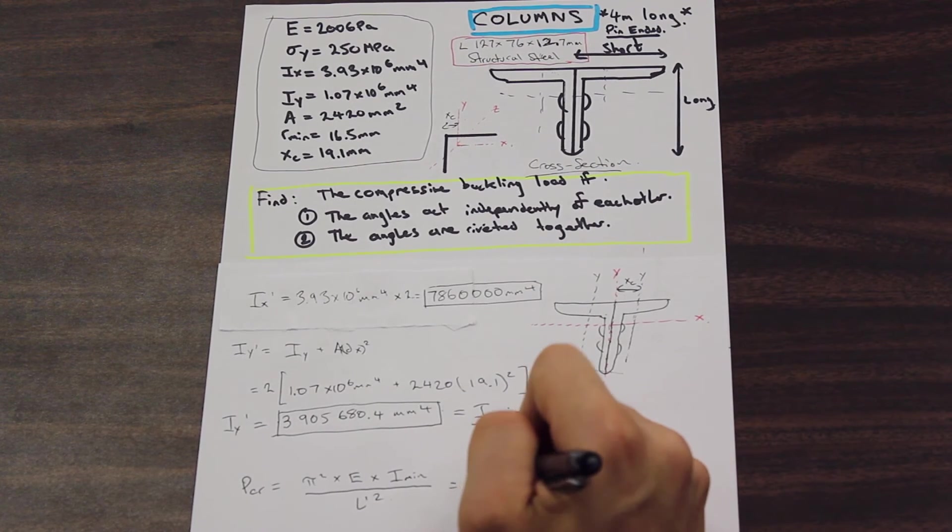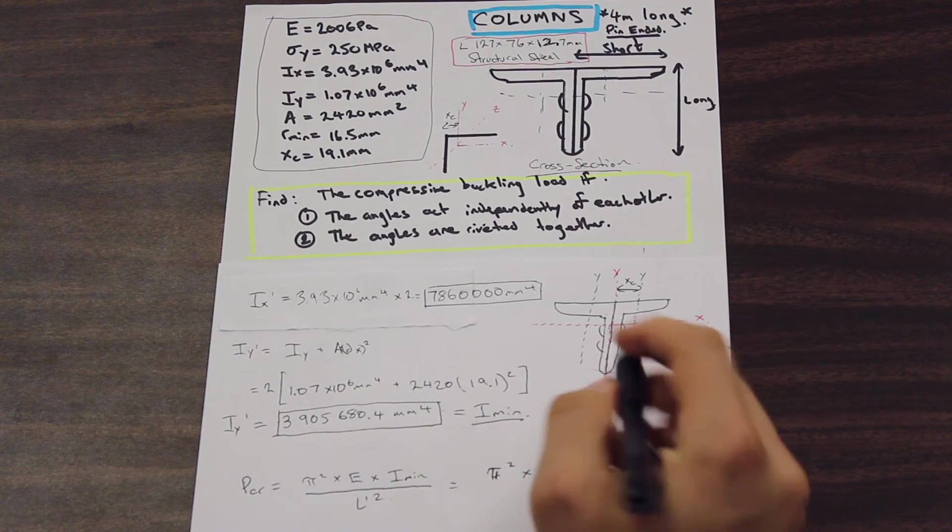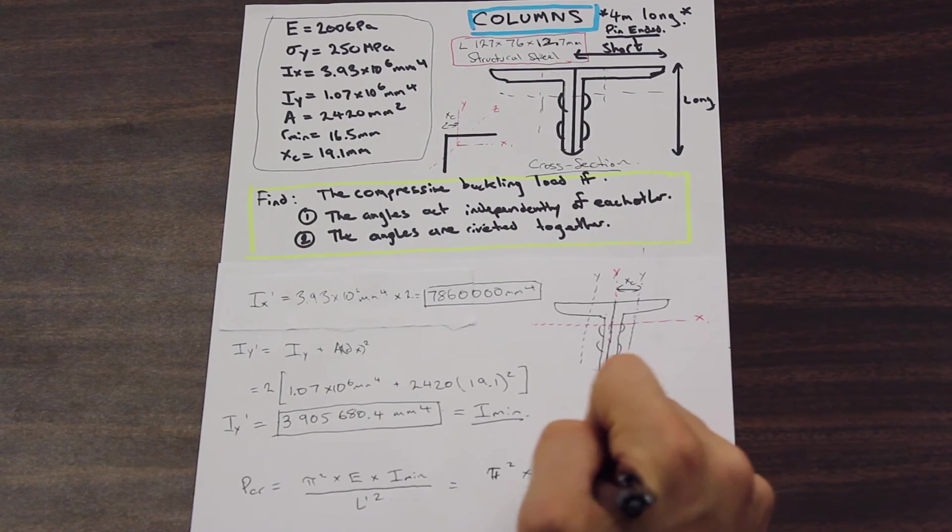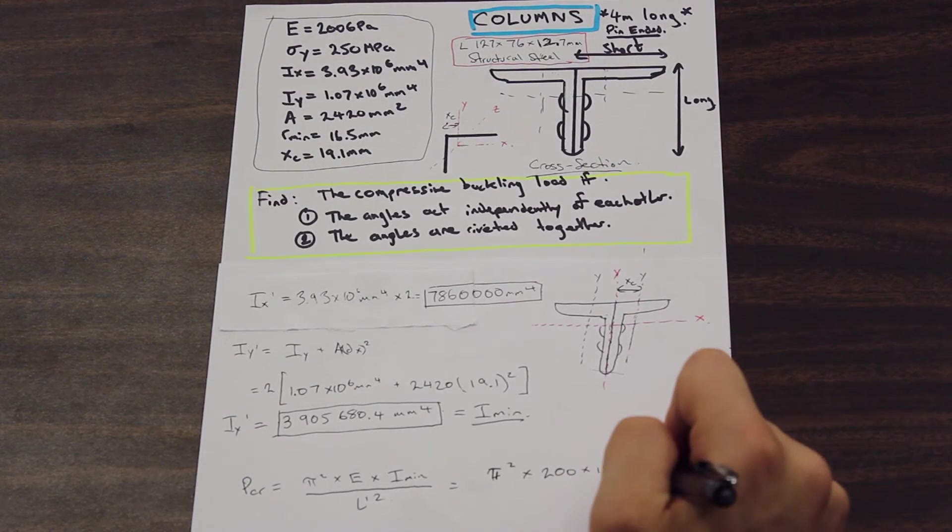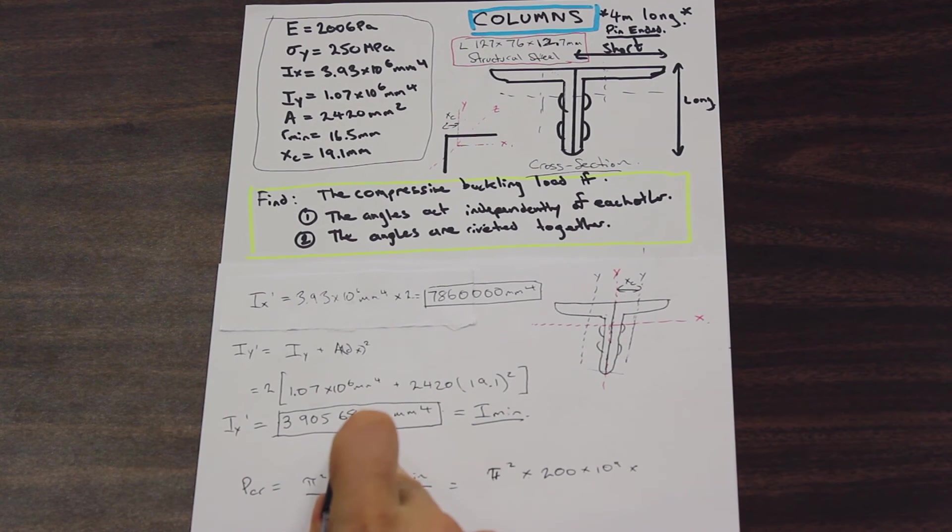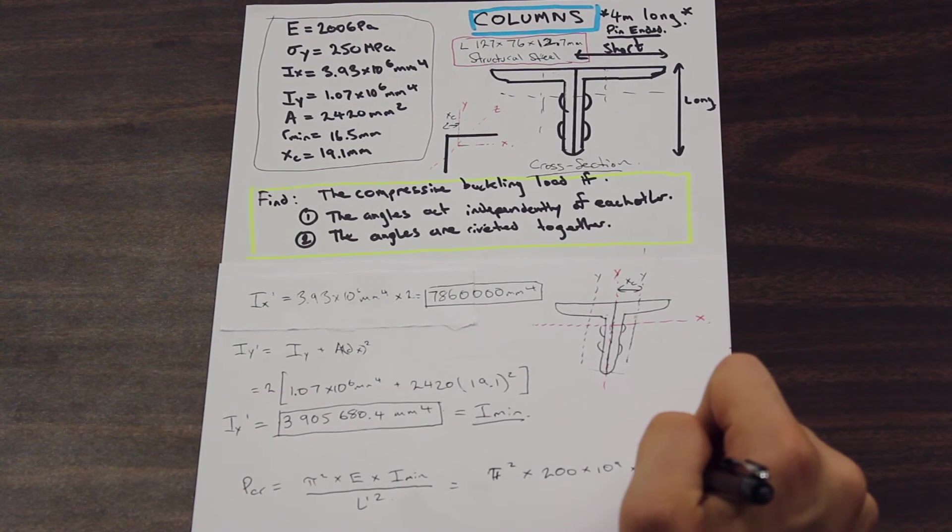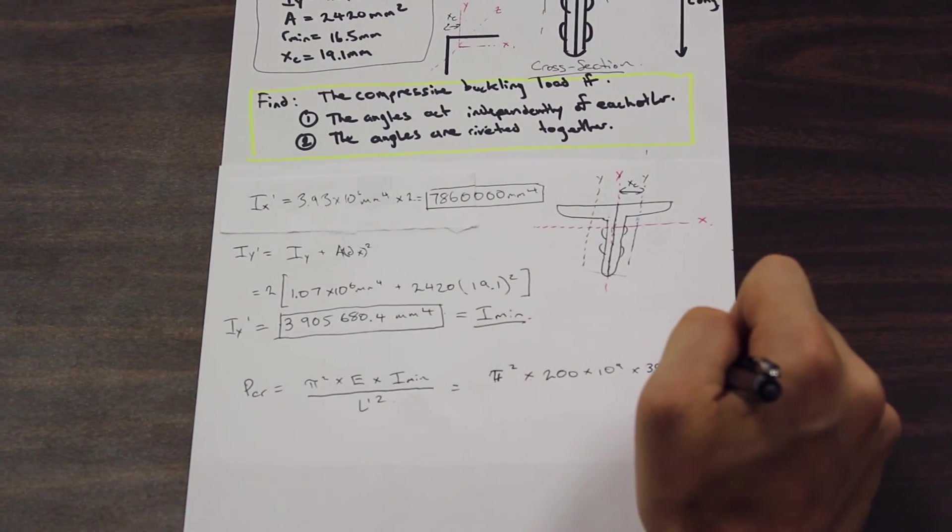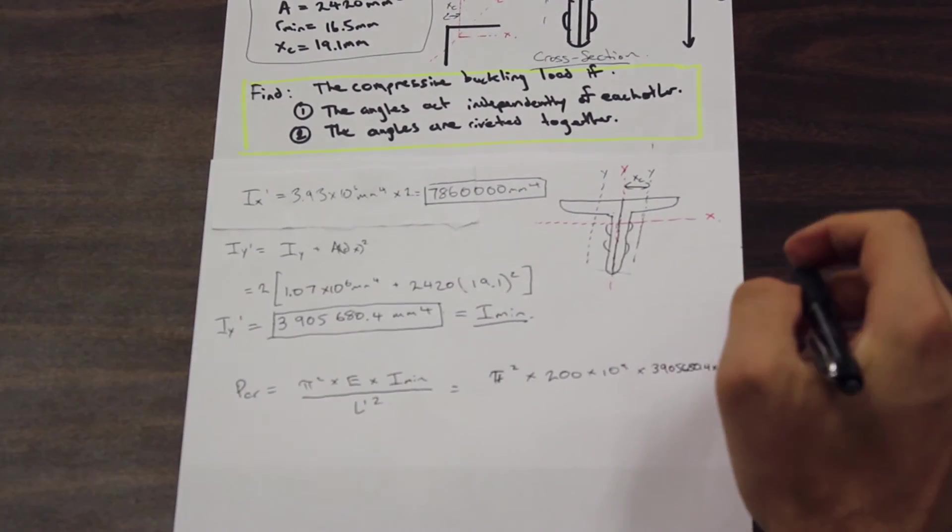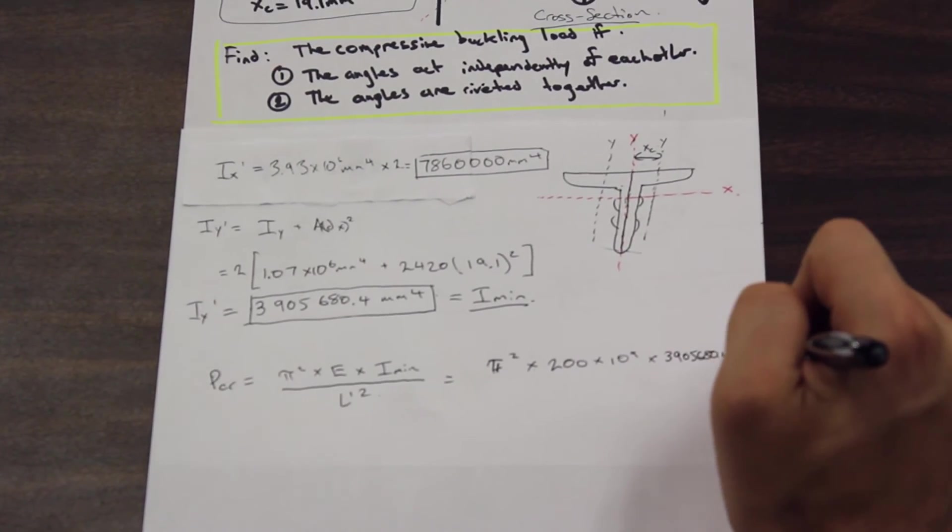Let's sub in. We have pi squared times our E value, which is 200 times 10 to the 9, because we're working with meters squared, times our I_minimum. In this case, our I_minimum is our I_y prime. So our I_y prime is, and we're going to convert that to meters squared, 680.4 times 10 to the negative 12.